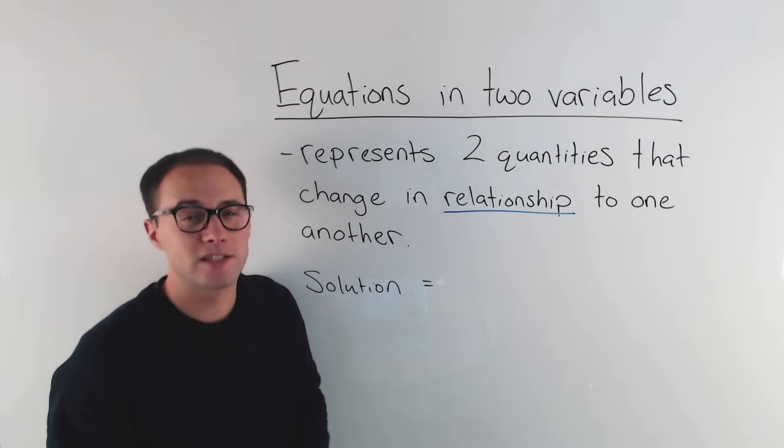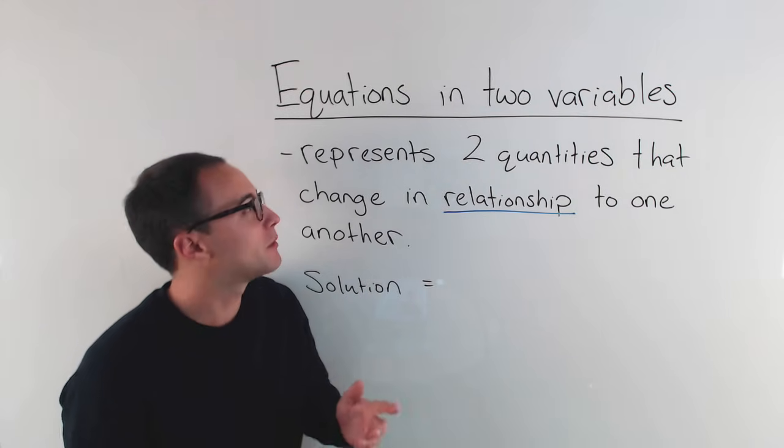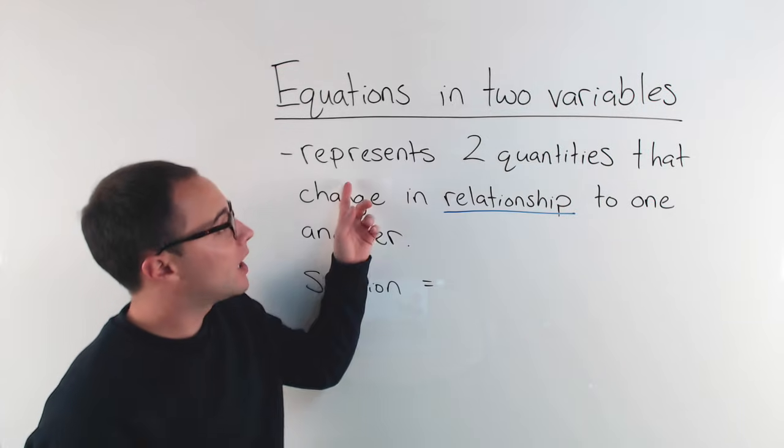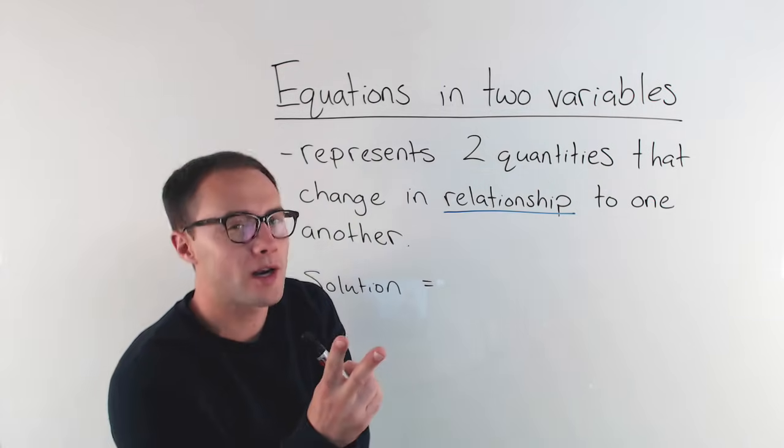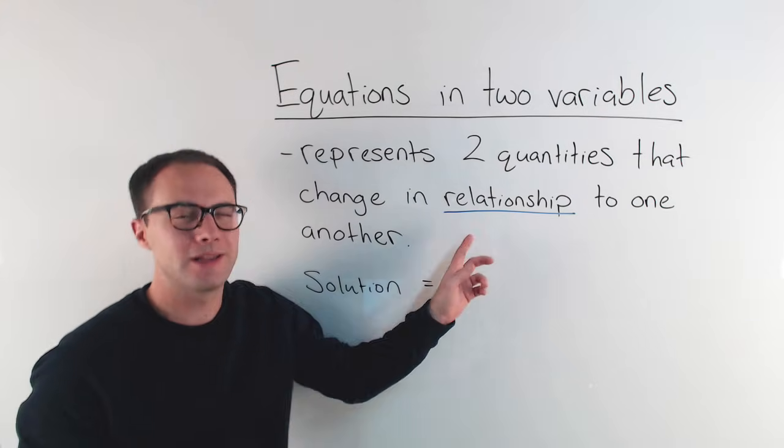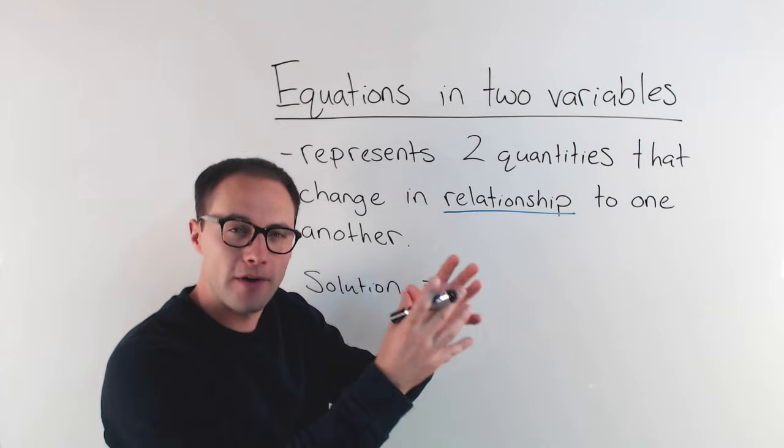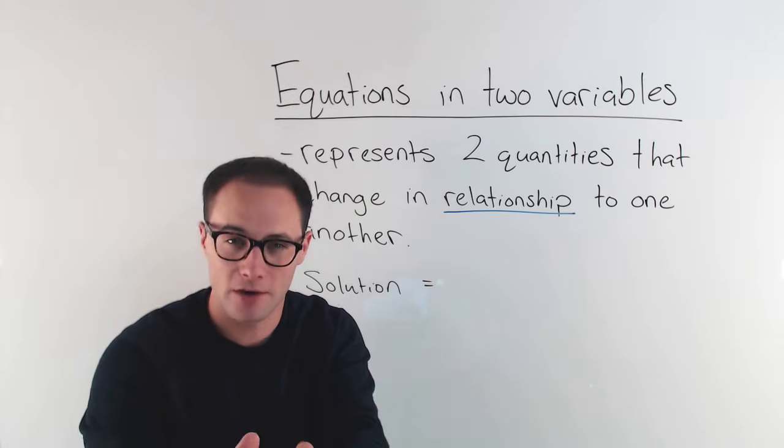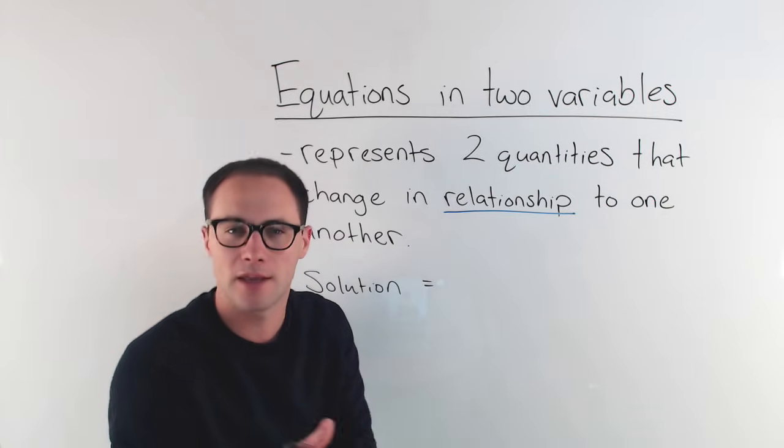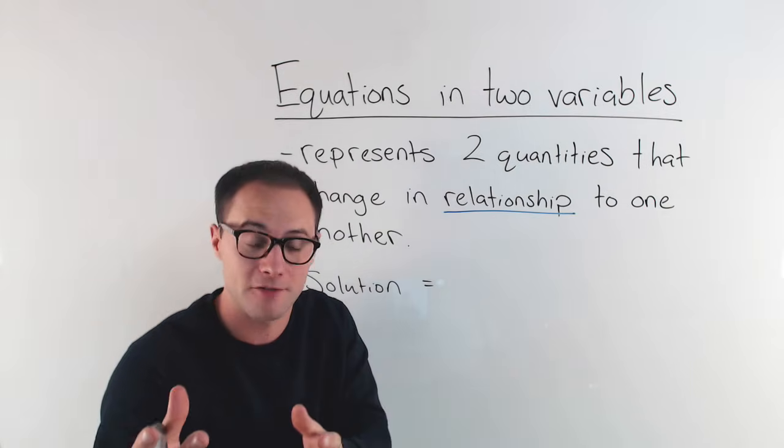So today we're writing equations in two variables. What exactly are we talking about when we're saying equations in two variables? Equations in two variables represent two quantities that change in relationship to one another. This word relationship is really important. What that means is as one of the variables changes, so does the other variable. They're related to each other. You can't change one and the other one not be affected.